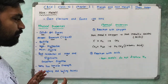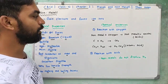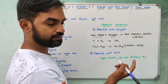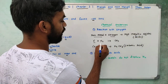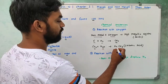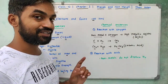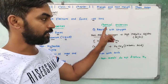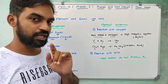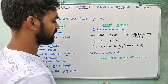Chemical properties of non-metals. Reaction with oxygen: non-metal plus oxygen produces non-metallic oxides. For example, carbon plus oxygen produces carbon dioxide. Carbon dioxide plus water produces carbonic acid. So non-metallic oxides are acidic in nature.